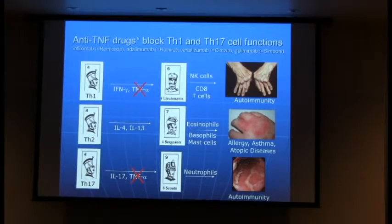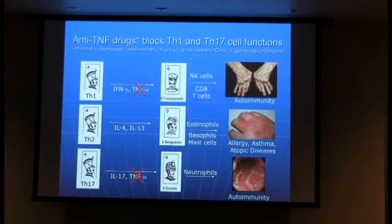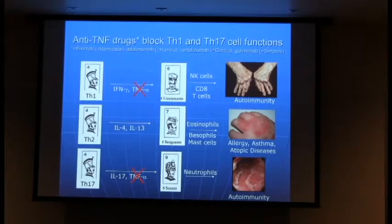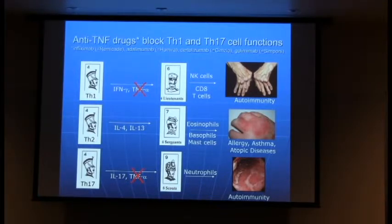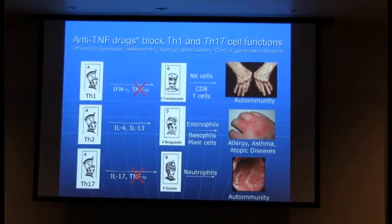Certain hormones these cells make have become attractive targets for therapy. The dominant one over the past ten years is TNF-alpha — a hormone made by both Th1 and Th17 cells, but not Th2 cells. We now have drugs that some of you may have heard of or tried: infliximab (Remicade), adalimumab (Humira), certolizumab (Cimzia), or golimumab (Simponi) — some of our most effective therapies for treating these inflammatory conditions.